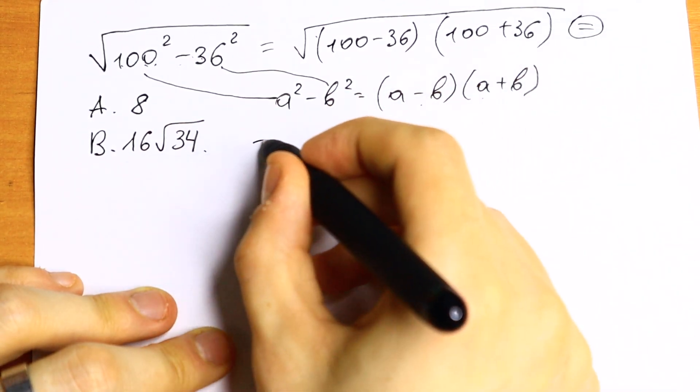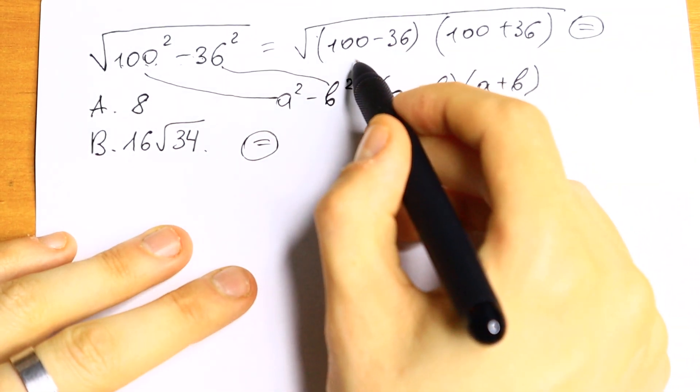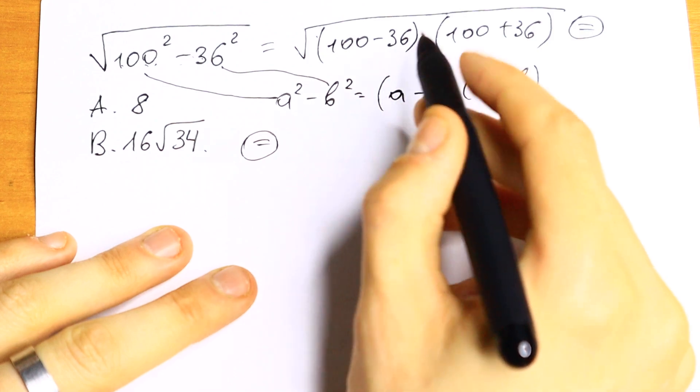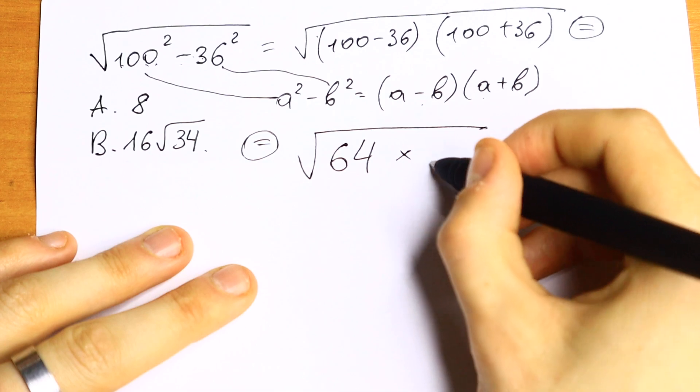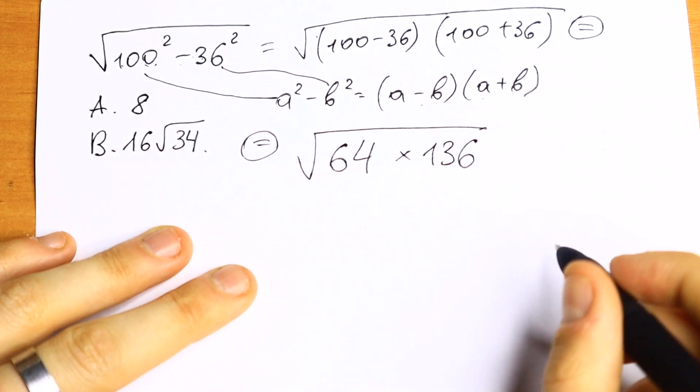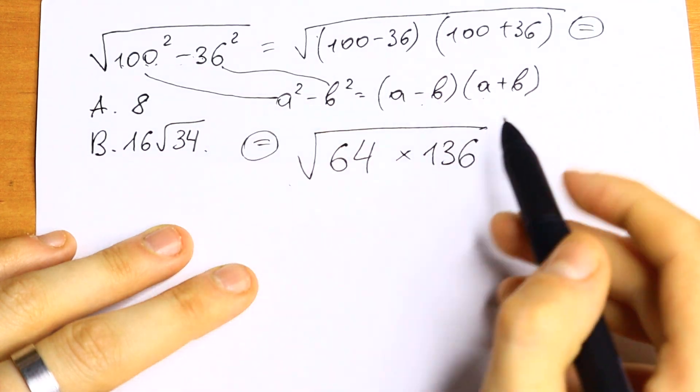What we are going to do next? Let's find all of these numbers. So if we find 100 minus 36, we will have 64 times 136. So this is our expression after this simplifying step.